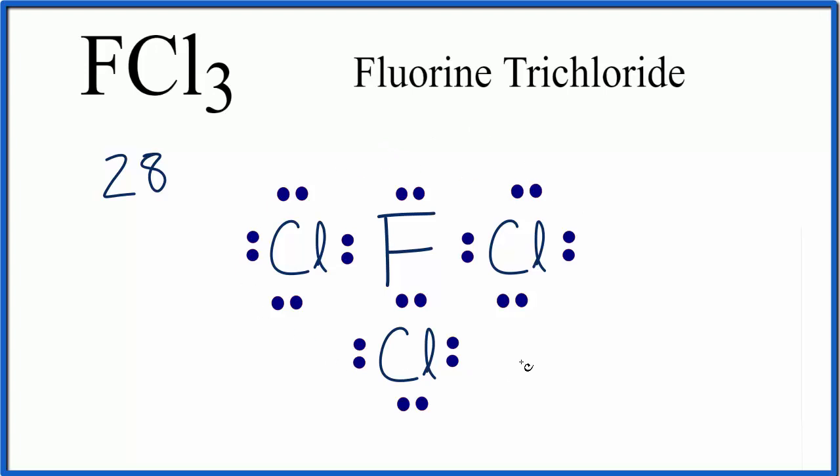Right here I've drawn what I think would be a pretty good Lewis structure, except I'm only using 26 valence electrons. So where do I put the extra electrons?